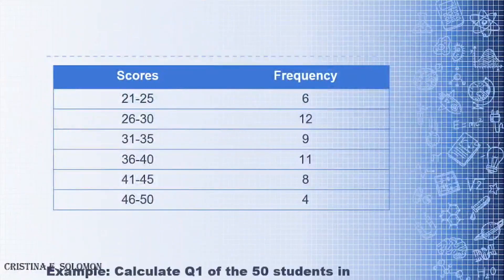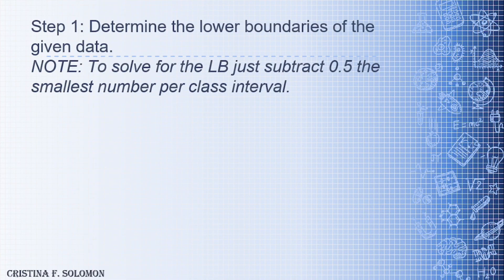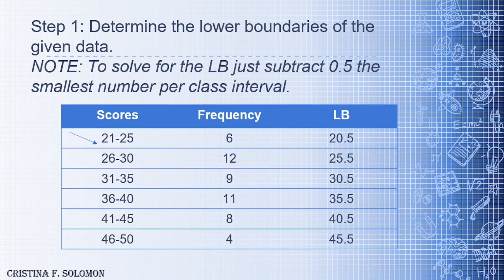To apply our formula, we need to calculate Q1 for the 50 students in a mathematics examination. We have the scores and their frequencies. The first step is to determine the lower boundaries of the given data. To solve for the lower boundary, we subtract 0.5 from the smallest number per class interval. So we have 21 − 0.5 = 20.5, 26 − 0.5 = 25.5, and then 30.5, 35.5, 40.5, until 45.5.